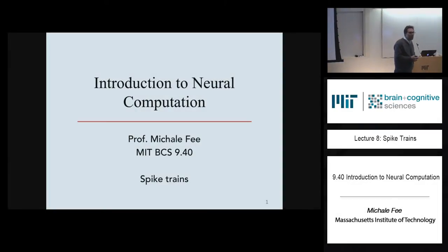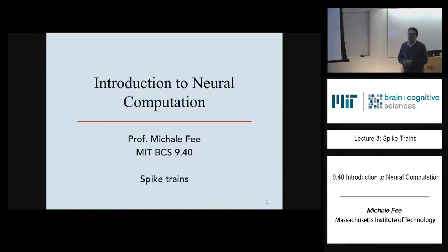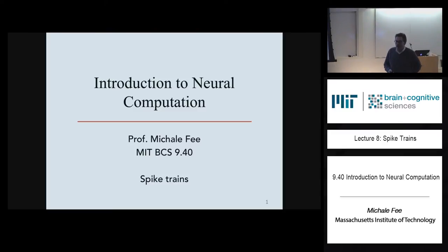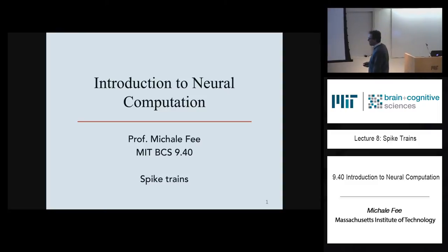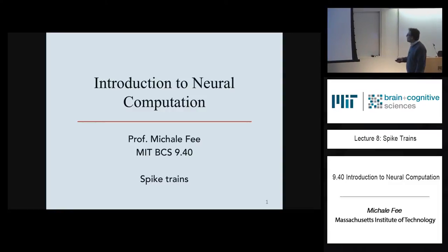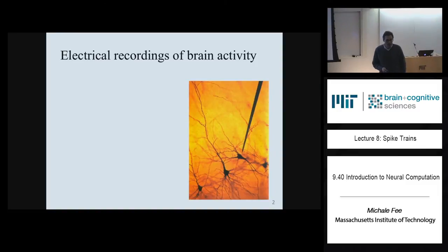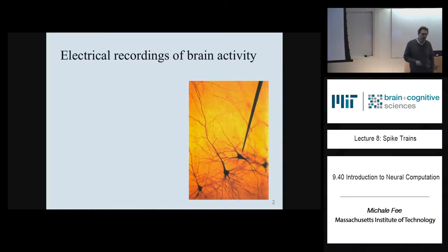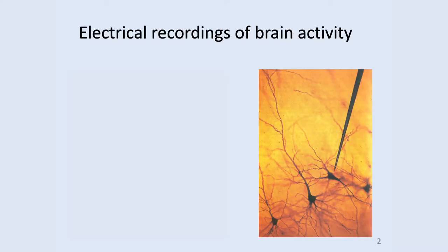So far in class, we have been developing an equivalent circuit model of a neuron, and we extended that model to understanding how action potentials are generated. More recently, we extended the model to understanding the propagation of signals in dendrites. Today, we are going to consider how we can record activity — record electrical signals related to neural activity in the brain — and in particular, record extracellular signals.